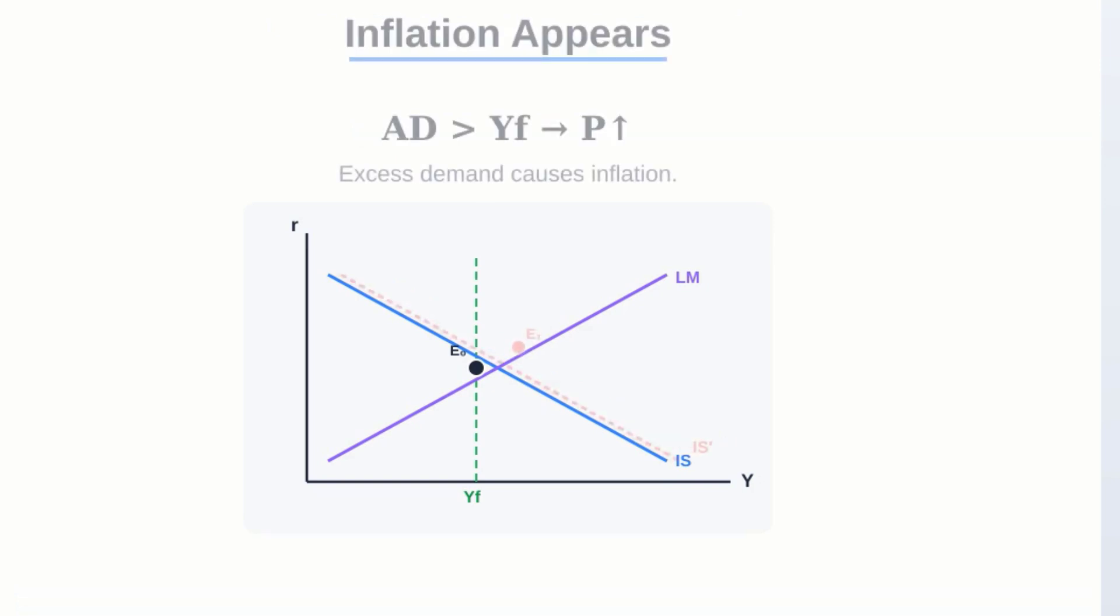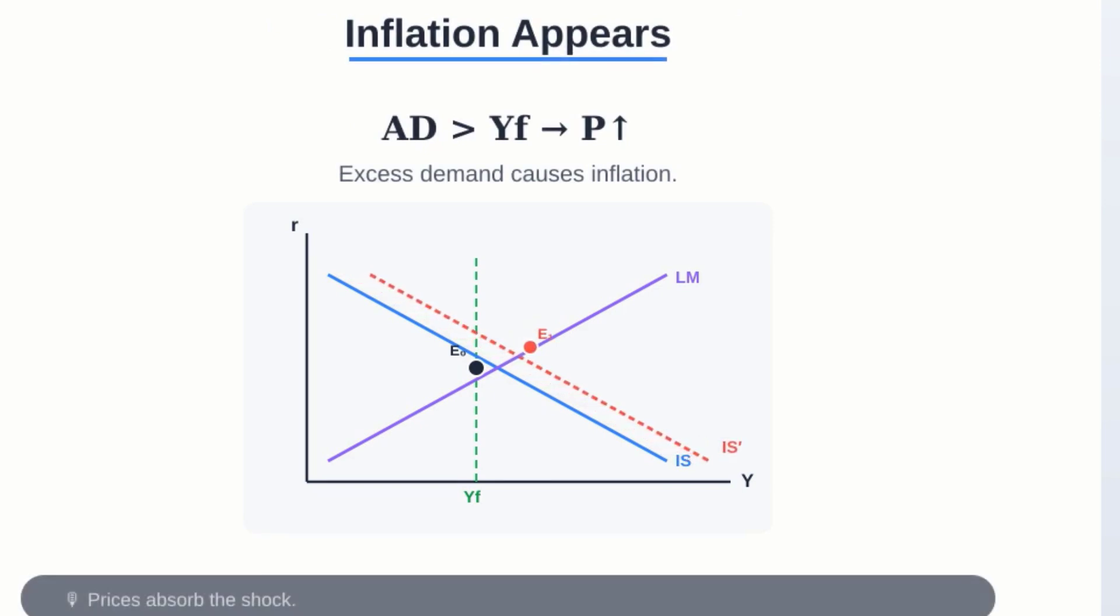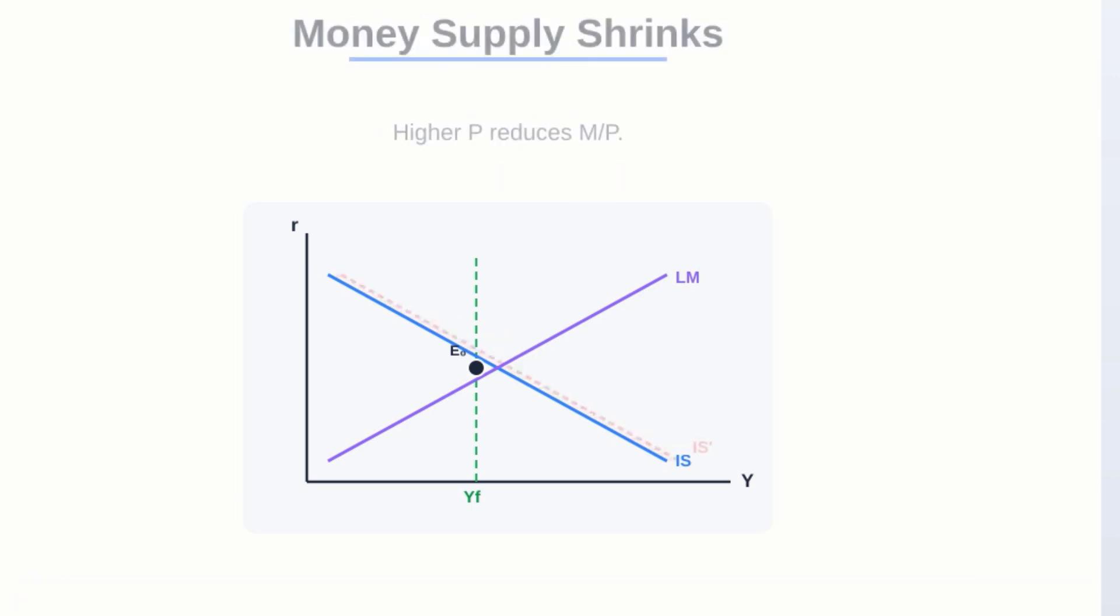And finally, this leads to the crowding out effect. While consumption definitely went up, those higher interest rates meant investment dropped by the exact same amount. So any growth in consumption came entirely at the expense of investment. National savings also took a hit.